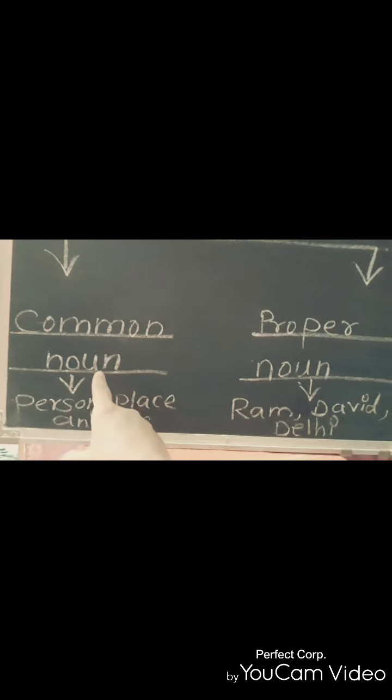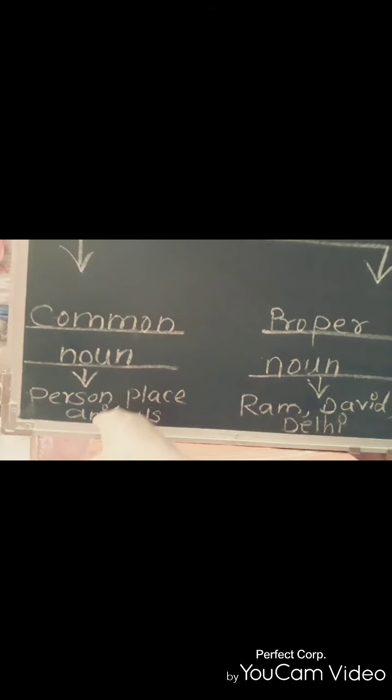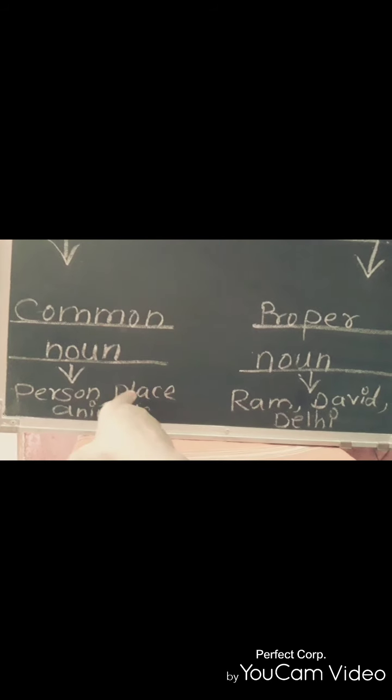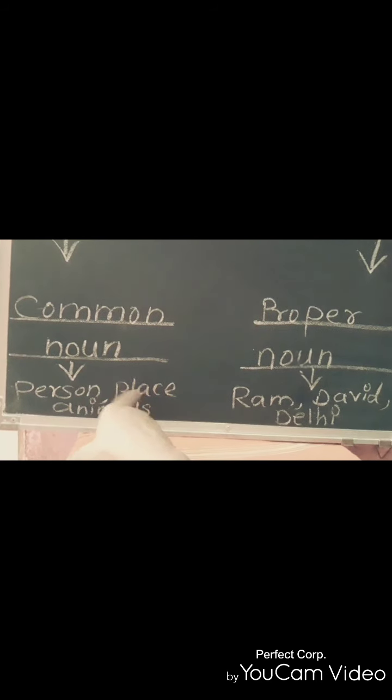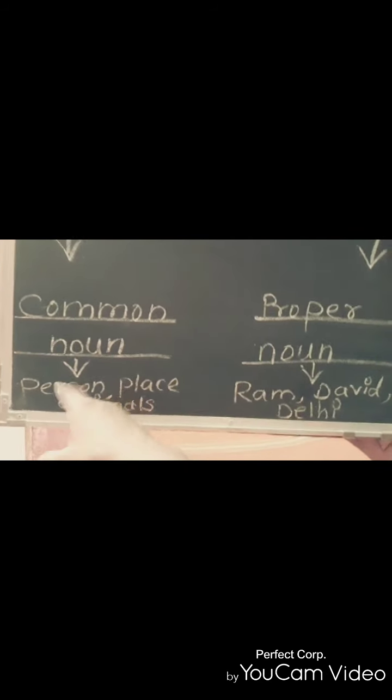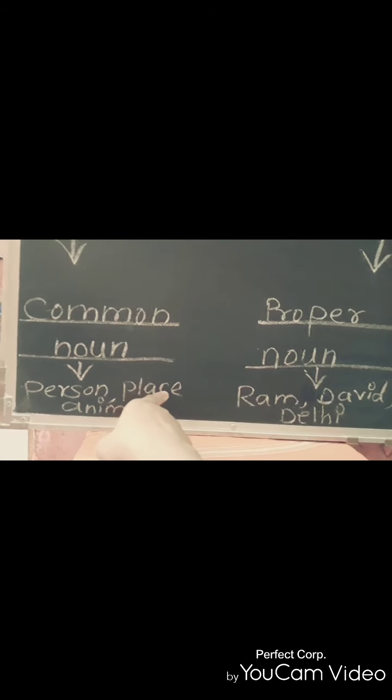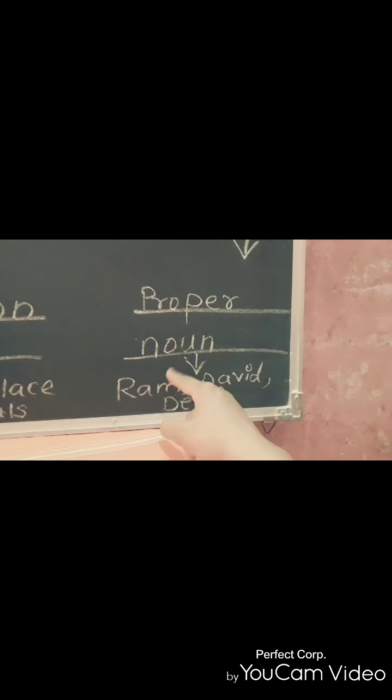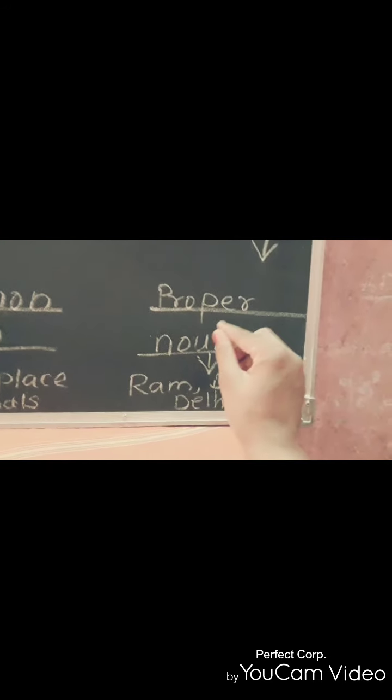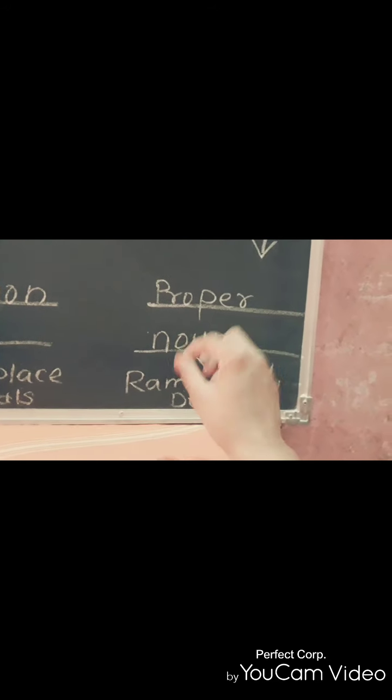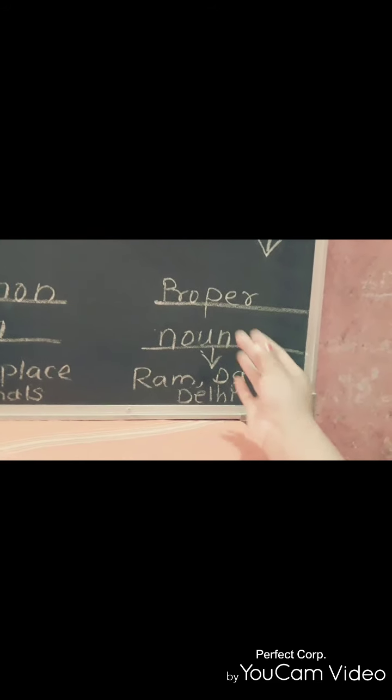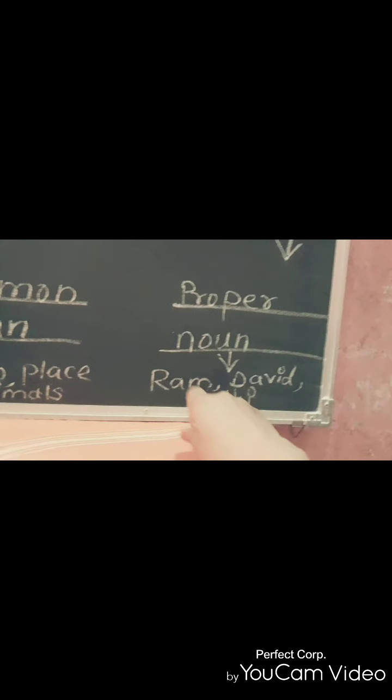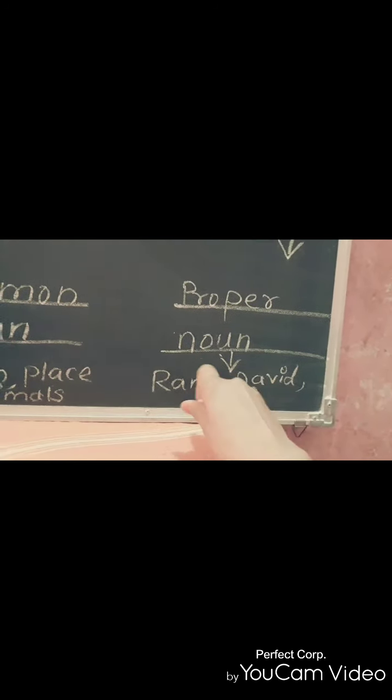And under common noun, we are going to study about group of animals, groups of fruits, groups of persons, different places. And under common noun, we are going to study about a particular person, means Ram, David, Sita, Gita, Rita, Meeta, and particular places like Delhi, Mumbai, Pune, Kolkata.